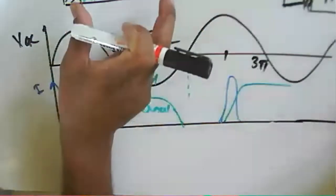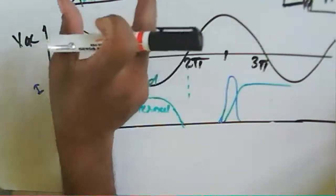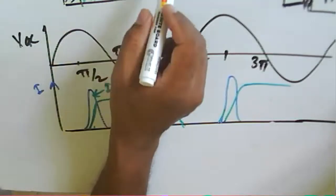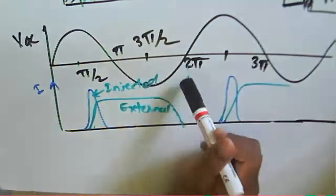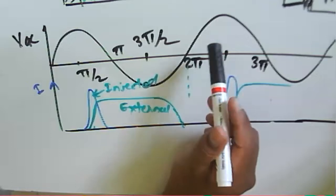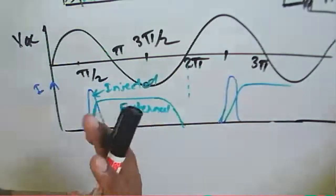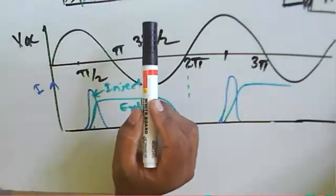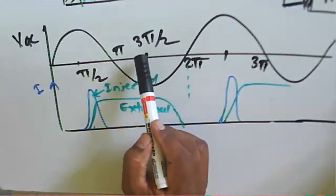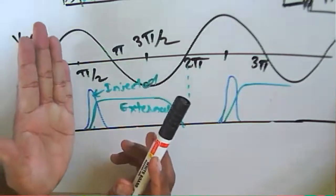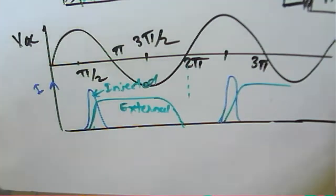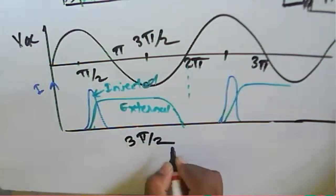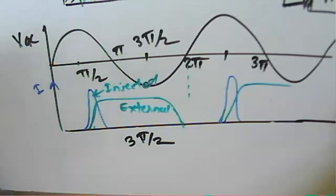More injected carriers are collected across the junction before the end of each cycle. The total transit angle for the BARITT diode is approximately 3π/2, based on where the injection current starts.